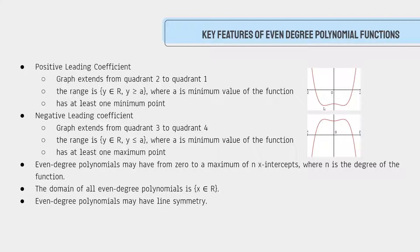Over here, a would be at the bottom point, and as you can see, it never goes below that point. Also, it must have at least one minimum point. For example, let's look at a parabola — it always has a minimum and then it goes back up.